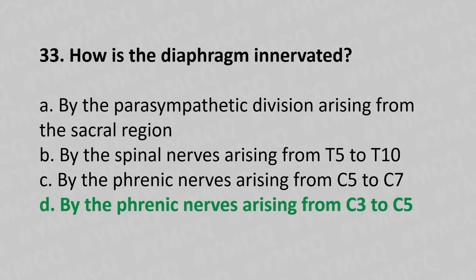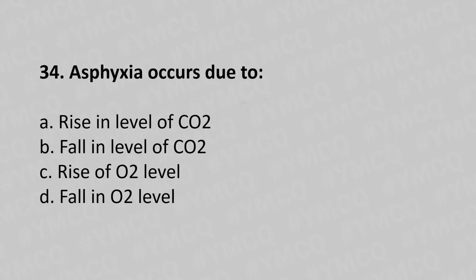Now move to our 34th question. Apnea occurs due to. Option A: Rise in the level of CO2. Option B: Fall in the level of CO2. Option C: Rise in O2 level. Option D: Fall in O2 level. And the answer is Option A, rise in the level of CO2.